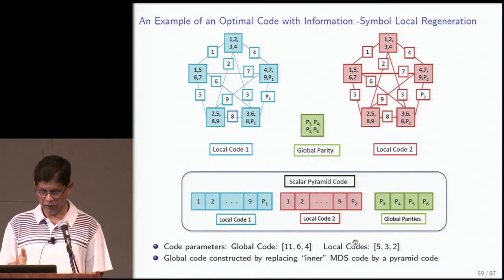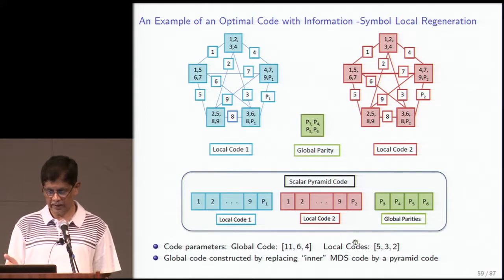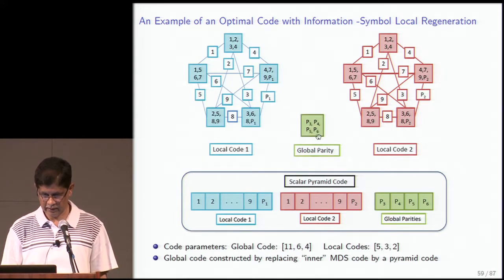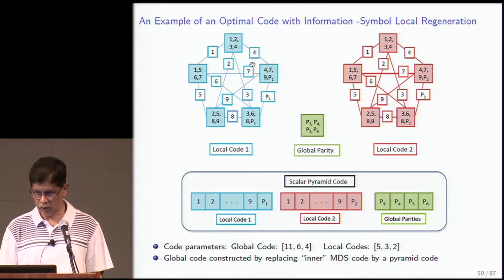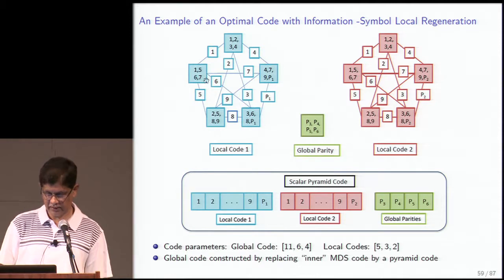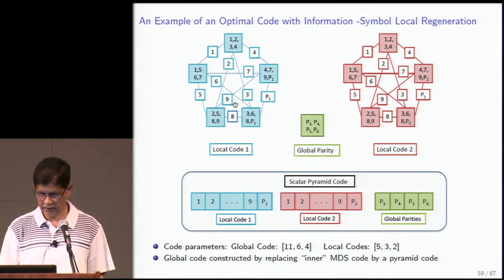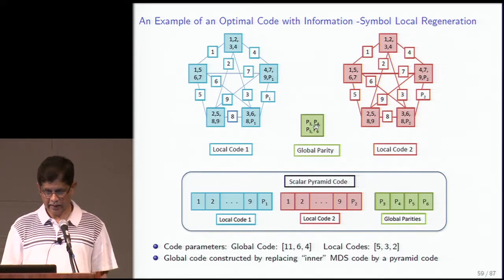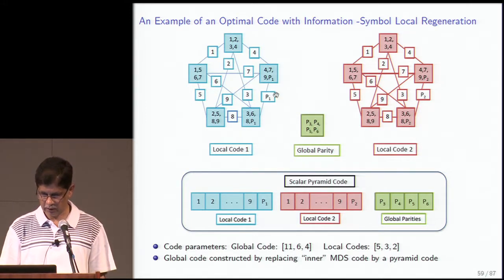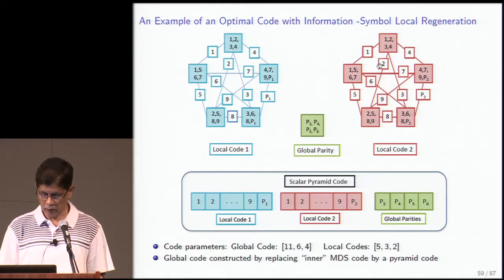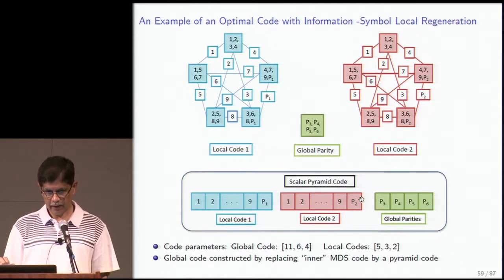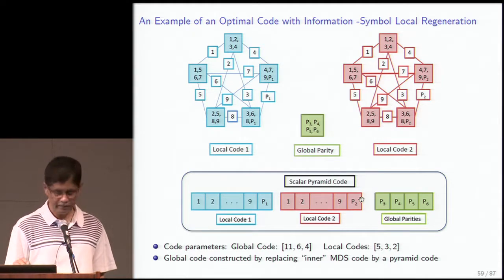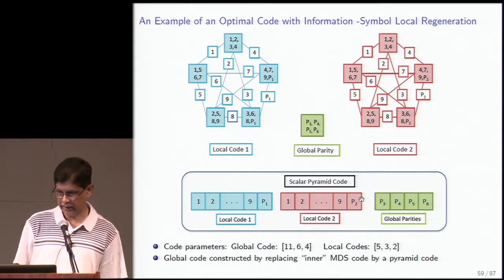Here is an example: a local regenerating code where the local codes are pentagon-based regenerating codes. There are two local codes each being a pentagon code, plus a global parity code. Interestingly, this local code with local regeneration is built out of a scalar code with locality — though I'll only mention that in passing. There are many constructions of this type; this is just one.